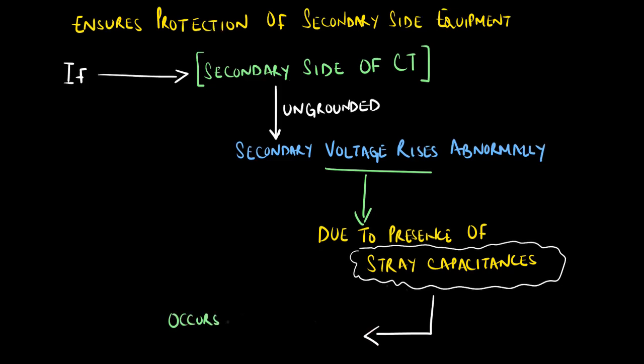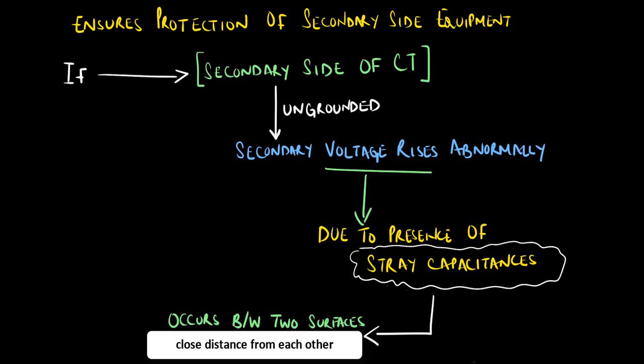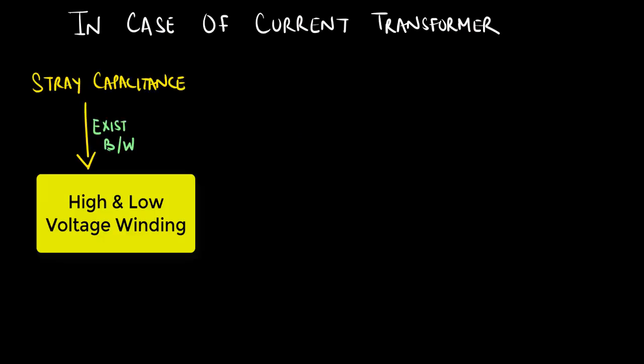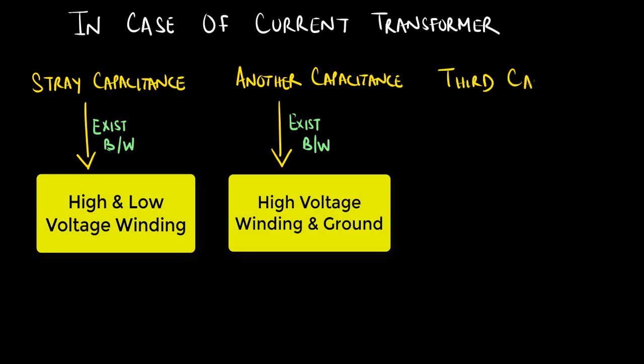In basic terms, these capacitances can occur between any two surfaces at a close distance from each other. In the case of a current transformer, a stray capacitance exists between the high voltage and the low voltage winding, another capacitance exists between the high voltage winding and the ground, and a third capacitance will occur between the low voltage winding and the ground.